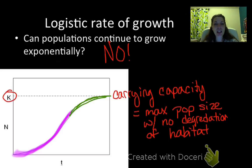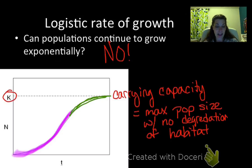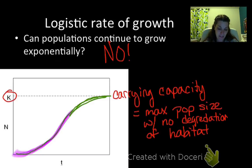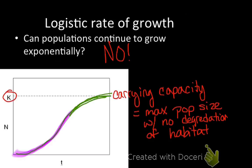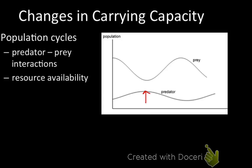The carrying capacity is just the maximum population size that an area can support with no degradation of habitat — it's how much can that area support, what are the resources available, and how many individuals can I support without actually starting to destroy the ecosystem or the environment there? So, that's our logistic growth. Most organisms go through periods where I have my exponential phase and then eventually we end up in our logistic phase. Let's look at some examples of that.